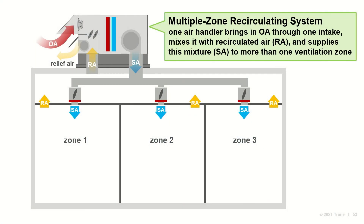In a multiple zone recirculating system, one air handler serves the ventilation needs of more than one zone. After outdoor air enters through the intake, it mixes with recirculated air from the zones before being conditioned and delivered back to those zones. The most common example is a conventional multiple zone VAV system using a package rooftop unit, floor-by-floor self-contained unit, or an air handling unit.